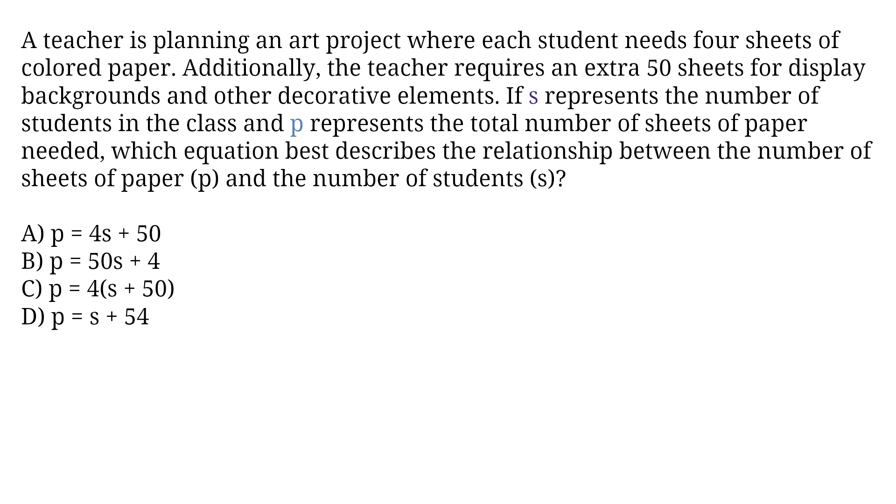A teacher is planning an art project where each student needs four sheets of colored paper. Additionally, the teacher requires an extra 50 sheets for display backgrounds and other decorative elements. If S represents the number of students in the class and P represents the total number of sheets of paper needed, which equation best describes the relationship between the number of sheets of paper P and the number of students S? A. P equals 4S plus 50. B. P equals 50S plus 4. C. P equals 4 times S plus 50. D. P equals S plus 54. To pass the GED math test, you need to be able to translate paragraphs into equations.